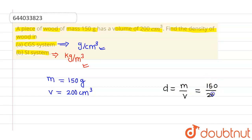The given mass is 150 grams and the given volume is 200 centimeter cube, so this can be written as 3 by 4 gram per centimeter cube. So this will be the density in CGS system.